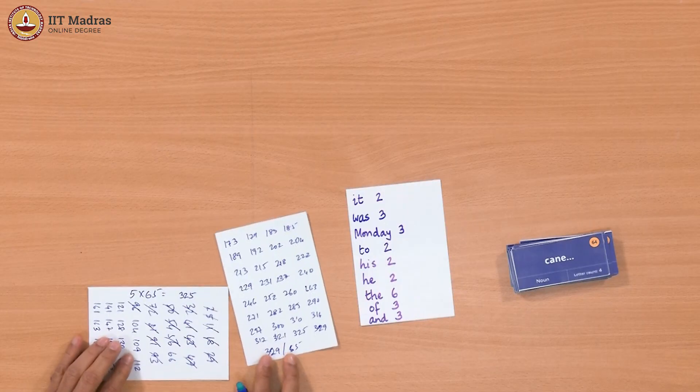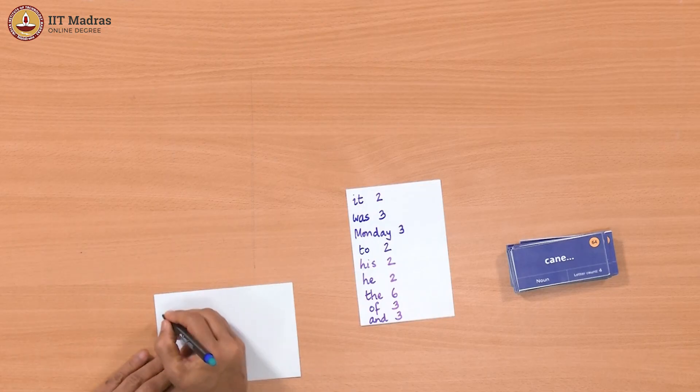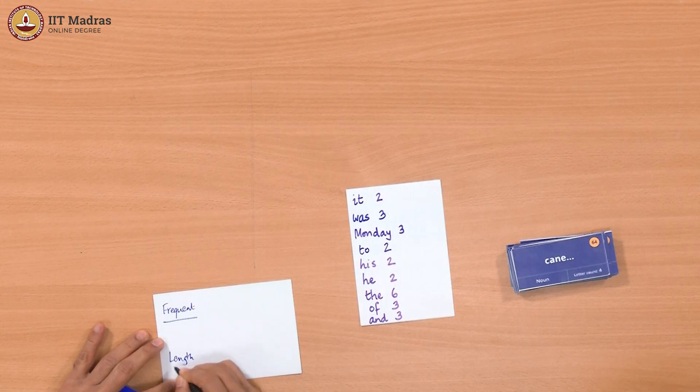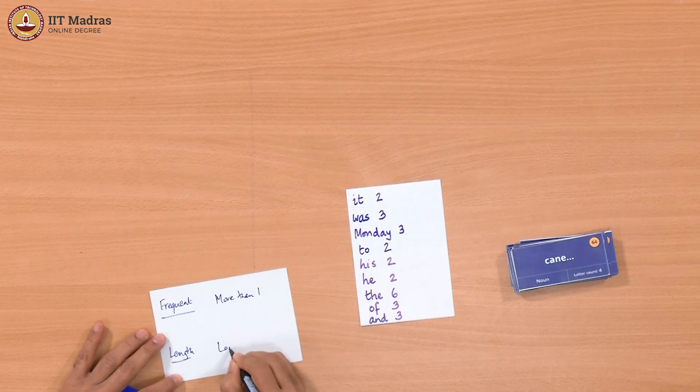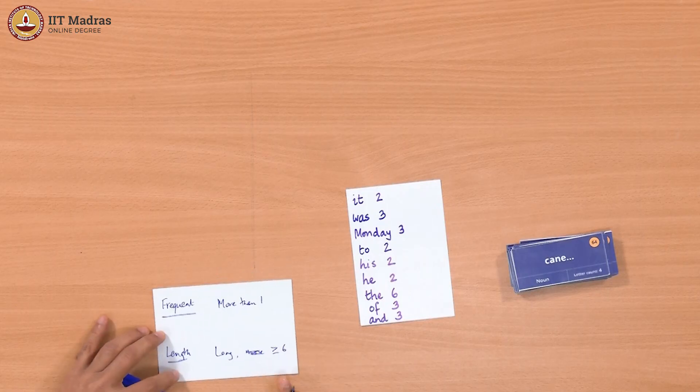We can say that 5 and less is short and 6 and above is long. So now we need to count. What do we have now? We have two parameters: short, long. We will write it down, but we have frequent and we have length. Frequent we said is more than 1. More than 1 is frequent. And long is greater than or equal to 6.